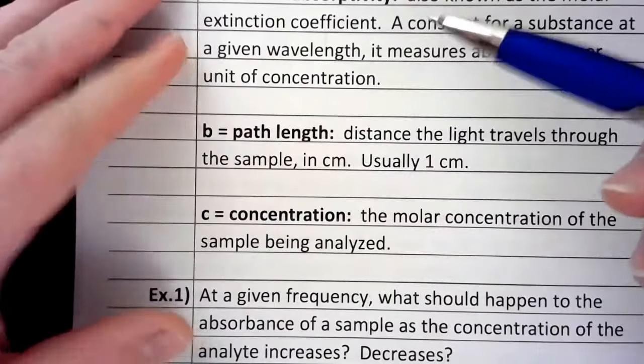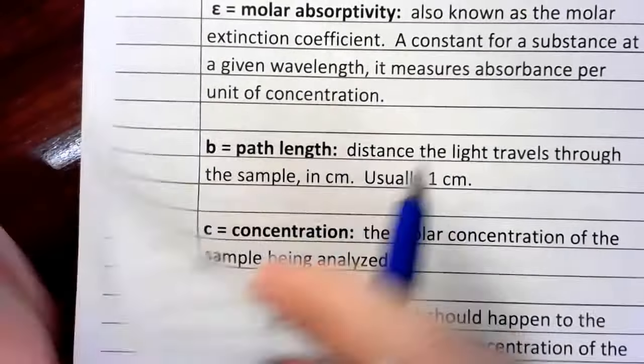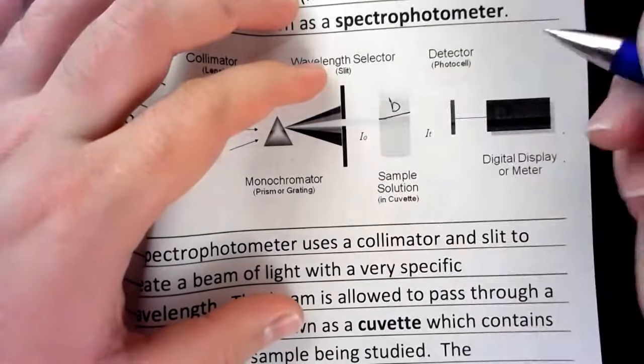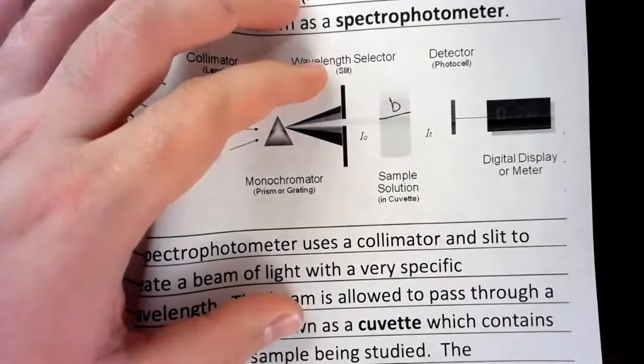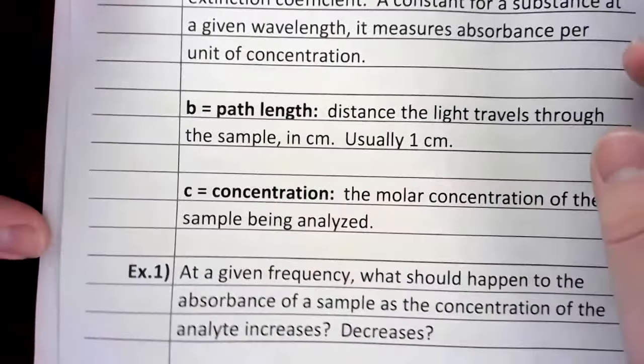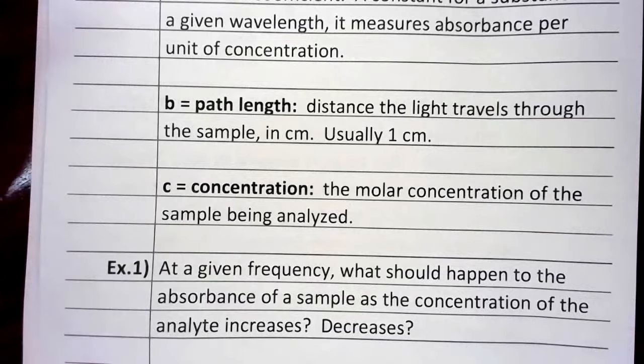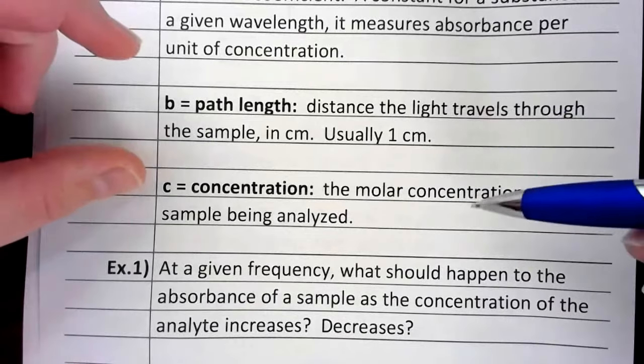B is called the path length. It's how far light has to go. So to give you an idea, this right here, this is b. And yes, that should be a straight line. It's usually one centimeter. All our cuvettes are going to be one centimeter. So b is really quite simple. It's just one.